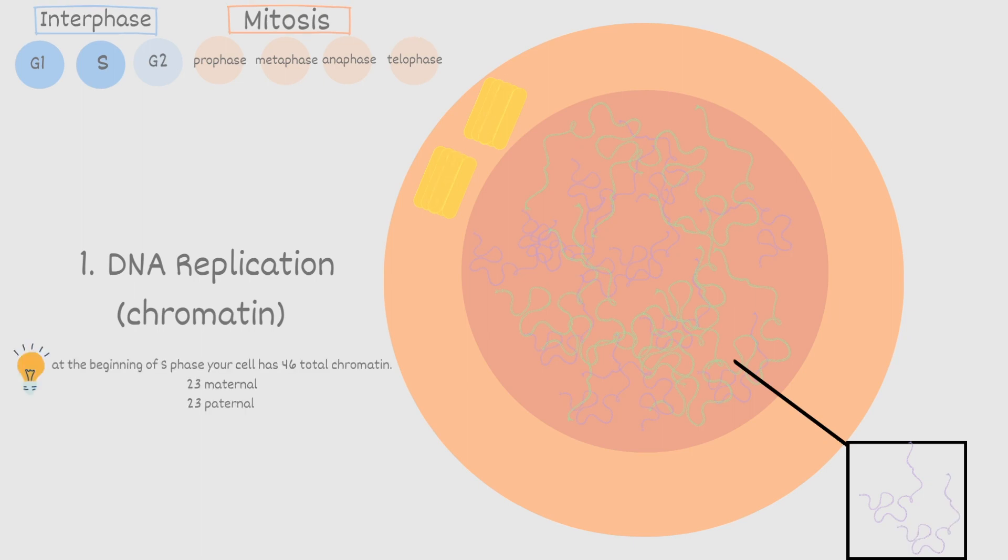Remember that at the beginning of the S phase your cell has 46 total chromatin. 23 maternal and 23 paternal. After DNA replication which is the end of S phase you have double the amount of chromatin. You now have 46 maternal and 46 paternal with a grand total of 92 chromatin. It is really important for you to not only understand what's going on in each phase of the cell cycle but also to keep track of the number of chromosomes and chromatin in each phase. Keeping track of this number I think will help you understand the entire cycle better.